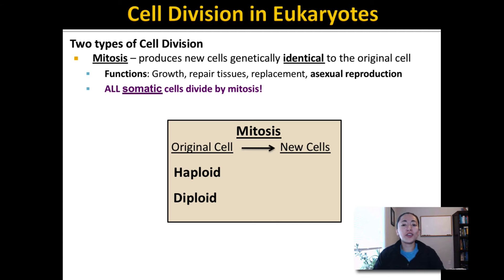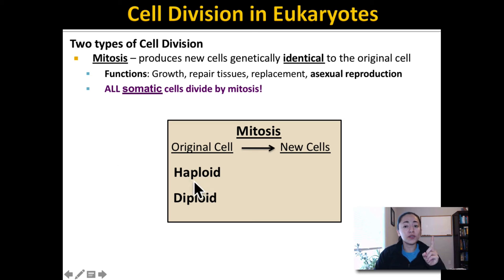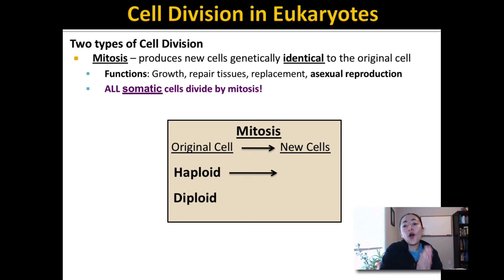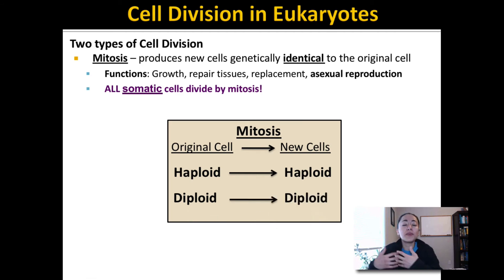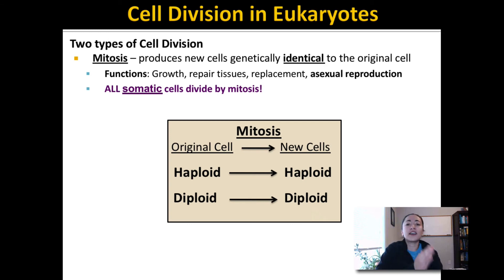Now that we know that mitosis creates new cells that are genetically identical to the original cell: if the original cell is haploid, meaning it only has one set of chromosomes, what type of new cells do you think will be created? The new cells must also be haploid if they are going to be identical to the original cell. What if the original cell is diploid? Then the new cells have to be diploid as well in order to be identical to the original cell. So haploid cells make haploid cells and diploid cells make diploid cells through the process of mitosis.